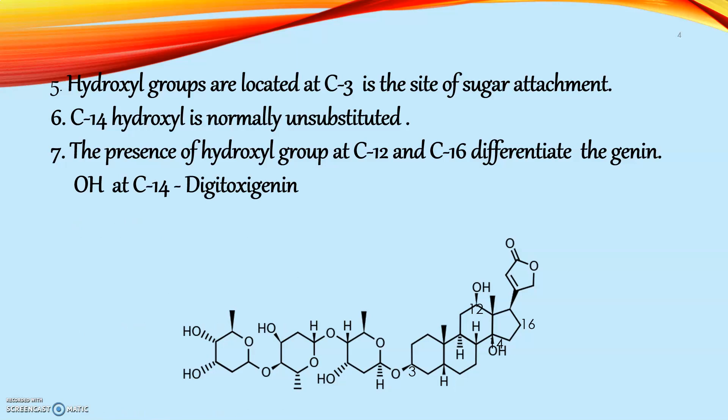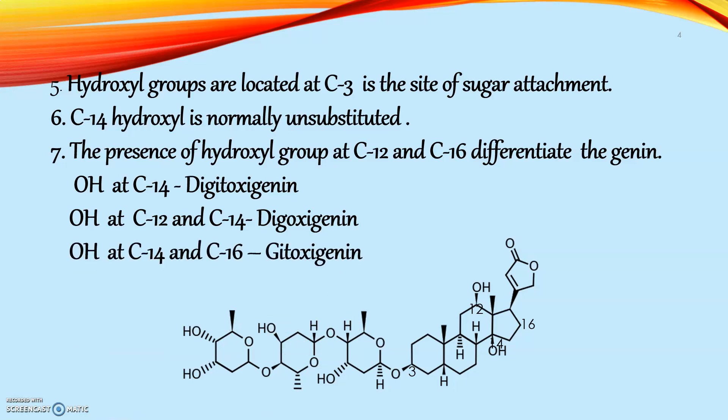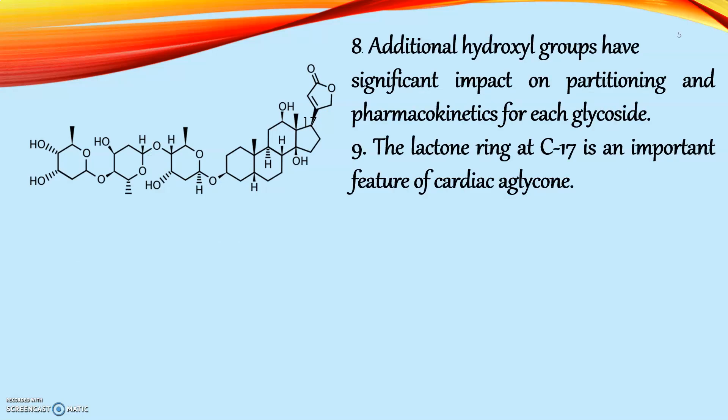The C14 hydroxyl is normally unsubstituted. The presence of hydroxyl groups at C12 and C16 differentiates the genins. When OH is at C14 only, it is called digitoxygenin. When OH is at C12 and C14, it is called digoxigenin. When OH is at C14 and C16, it is called gitoxigenin. These additional hydroxyl groups have a significant impact on partitioning and pharmacokinetics for each glycoside and greatly affect the duration of action.